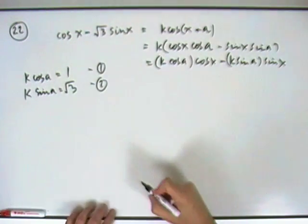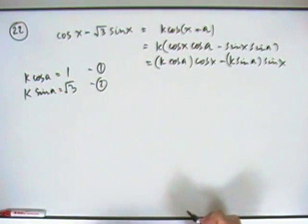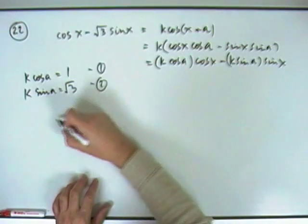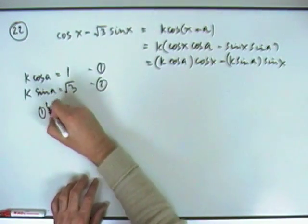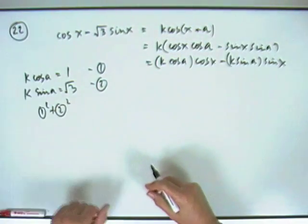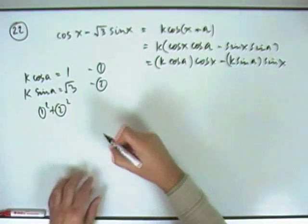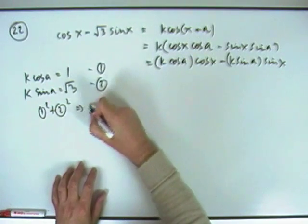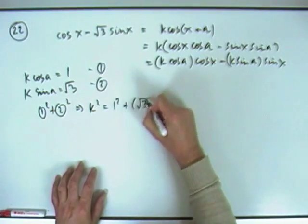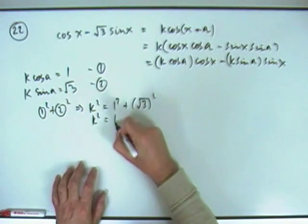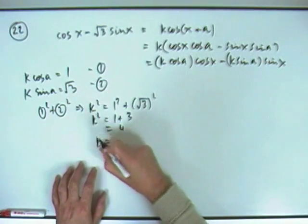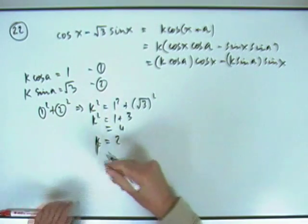I've got a pair of simultaneous equations, although you may well solve that not by even stating that or knowing that. The technique would be: if you square them and add them, the sines and cosines will disappear, because sin squared and cos squared makes one, leaving you just with k squared is one squared plus root three squared. So k squared is one plus three which is four, so k equals two.